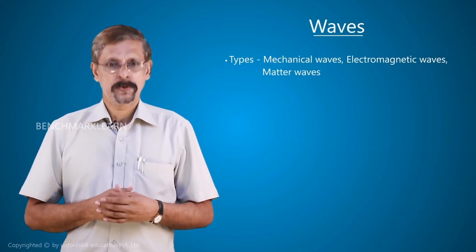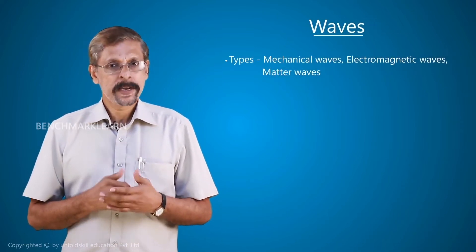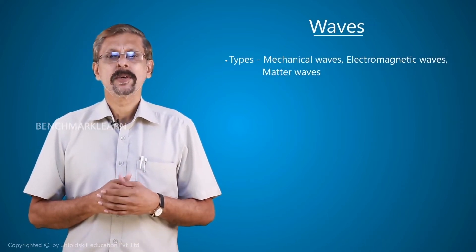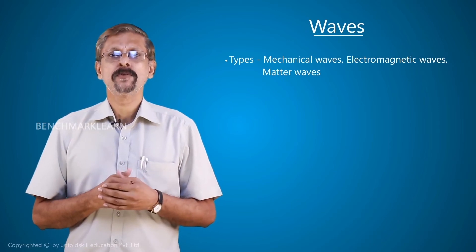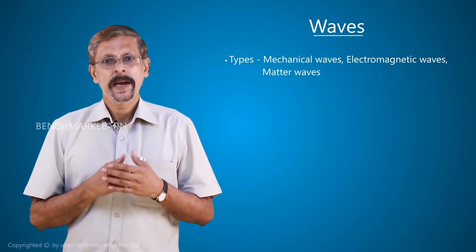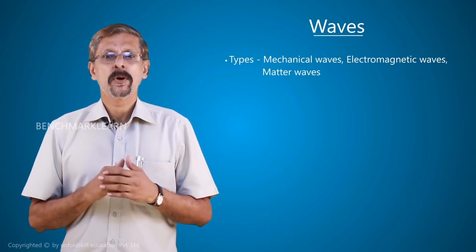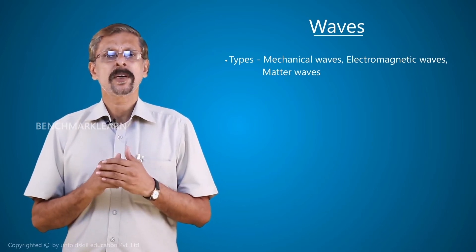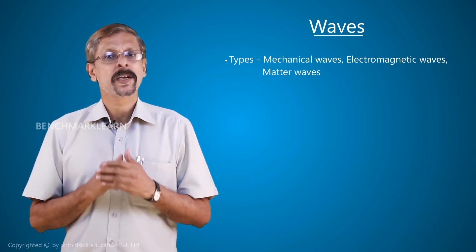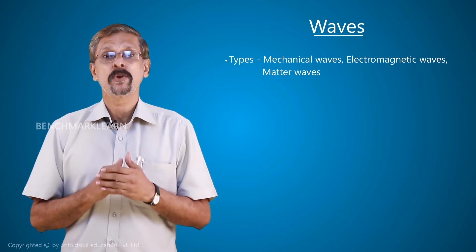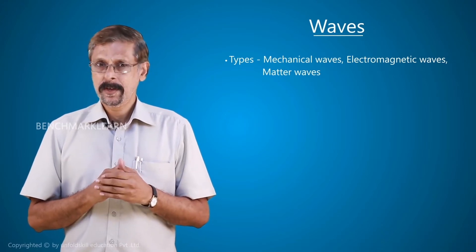There are different types of waves: mechanical waves, electromagnetic waves, and matter waves. All these waves are not the same; they are different in their own ways.